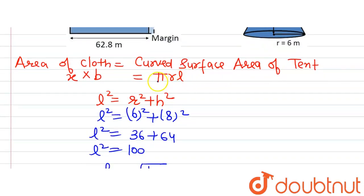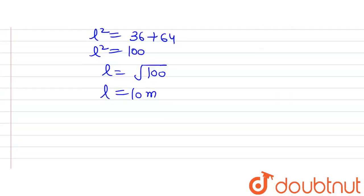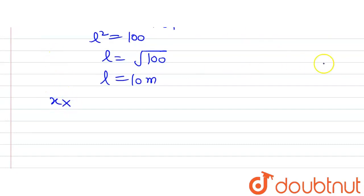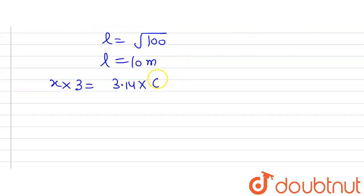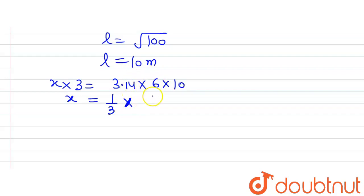Now putting in the values of radius, slant height, and π = 3.14, we have x multiplied by the width (3 meters) equals 3.14 multiplied by r (6 meters) multiplied by 10. So x × 3 = 3.14 × 6 × 10. Solving: 3.14 × 6 = 18.84, multiplied by 10 gives 188.4. Dividing 188.4 by 3 gives x = 62.8 meters.